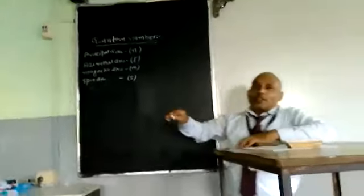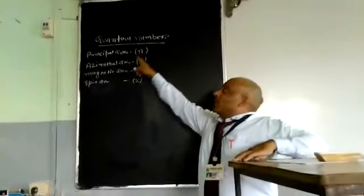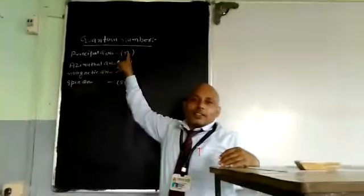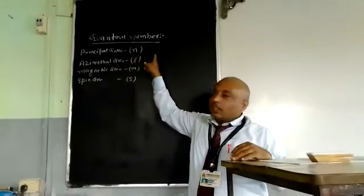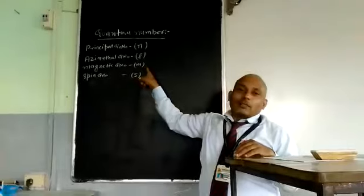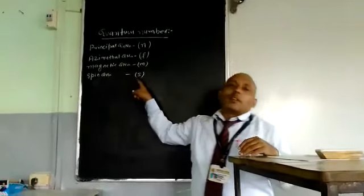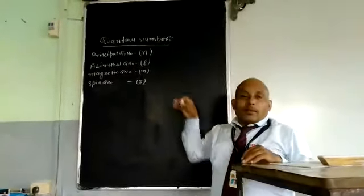Let us be studying about quantum number. It is of four types: principal quantum number denoted by small n, azimuthal quantum number, magnetic quantum number, and spin quantum number. These are the quantum numbers.